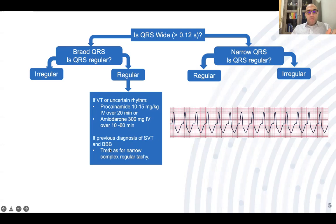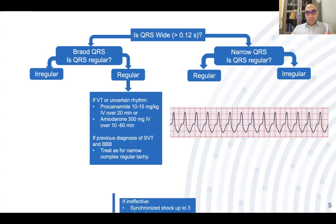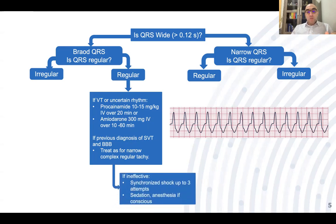If you are sure this is SVT with bundle branch block, treat as SVT. If treatment for regular wide complex tachycardia with IV antiarrhythmic medication is not effective, consider synchronized cardioversion up to three attempts. If the patient is conscious, consider conscious sedation.